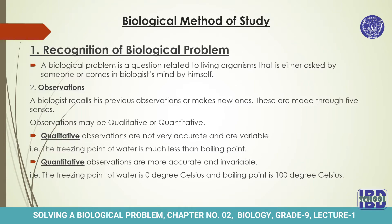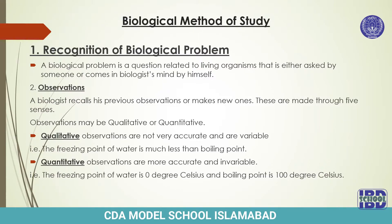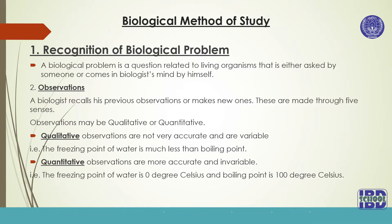Now let's study all the steps in detail. The first step is recognition of a biological problem. A biological problem is a question related to living organisms that is either asked by someone or comes into a biologist's mind by themselves. So a biological problem is a question which may arise in someone's mind or in the mind of a biologist.